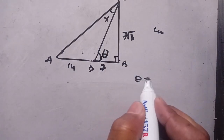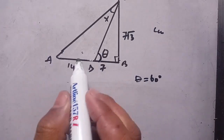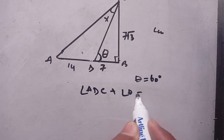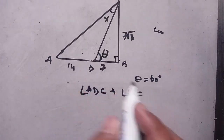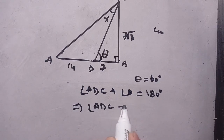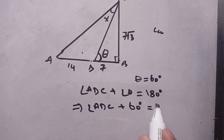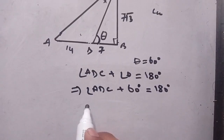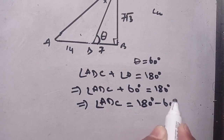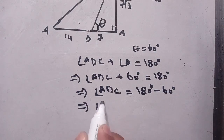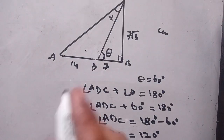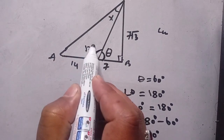Thus theta is equal to 60 degrees. Now, angle ADC plus angle theta equals 180 degrees, because they form a straight line angle. This implies angle ADC plus 60 degrees equals 180 degrees, which implies angle ADC equals 180 minus 60, which gives angle ADC equal to 120 degrees.